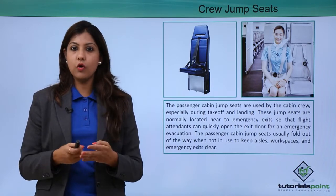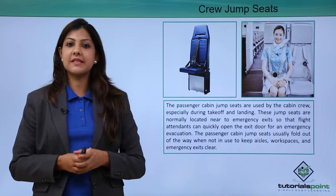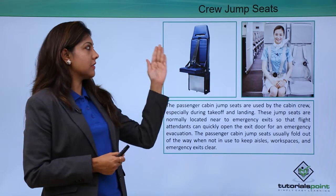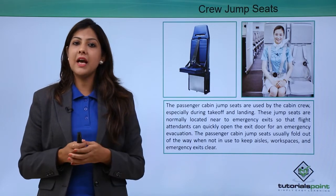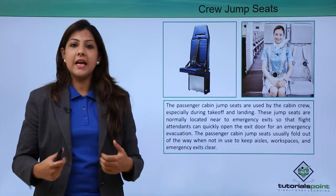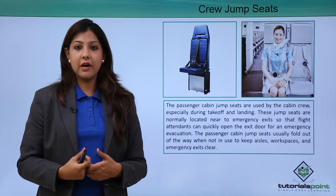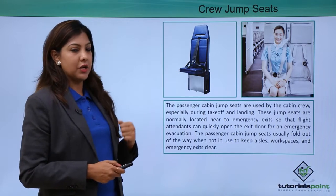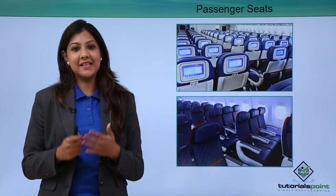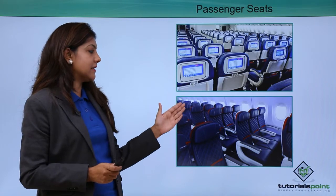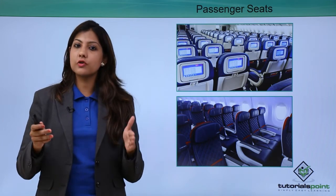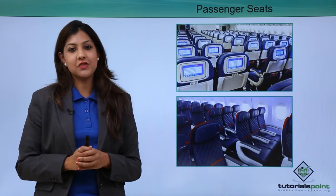Crew jump seats correspond in number to the number of crew members. Unlike passenger seats, the crew jump seat is foldable — it folds back automatically when you stand up. It also has a harness as well as a seat belt and front harness to secure the crew. Passenger seats are non-foldable and include an armrest, in-flight entertainment system, tray table, a pocket with an air sickness bag, and a safety instruction card.